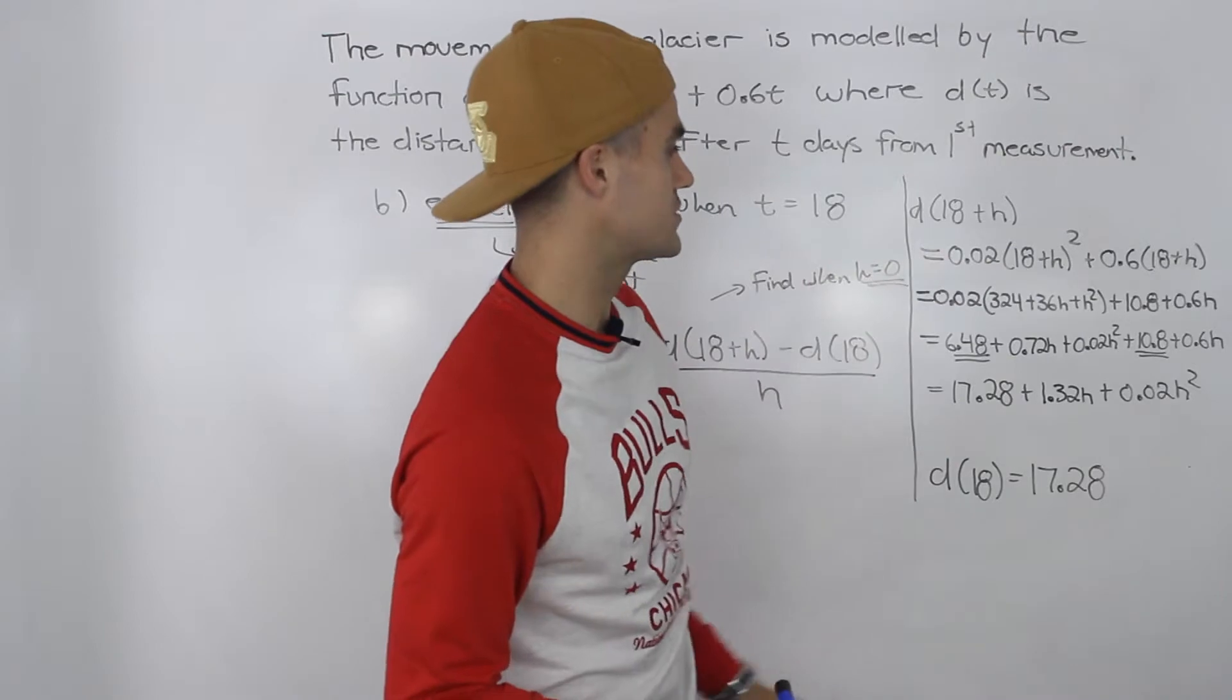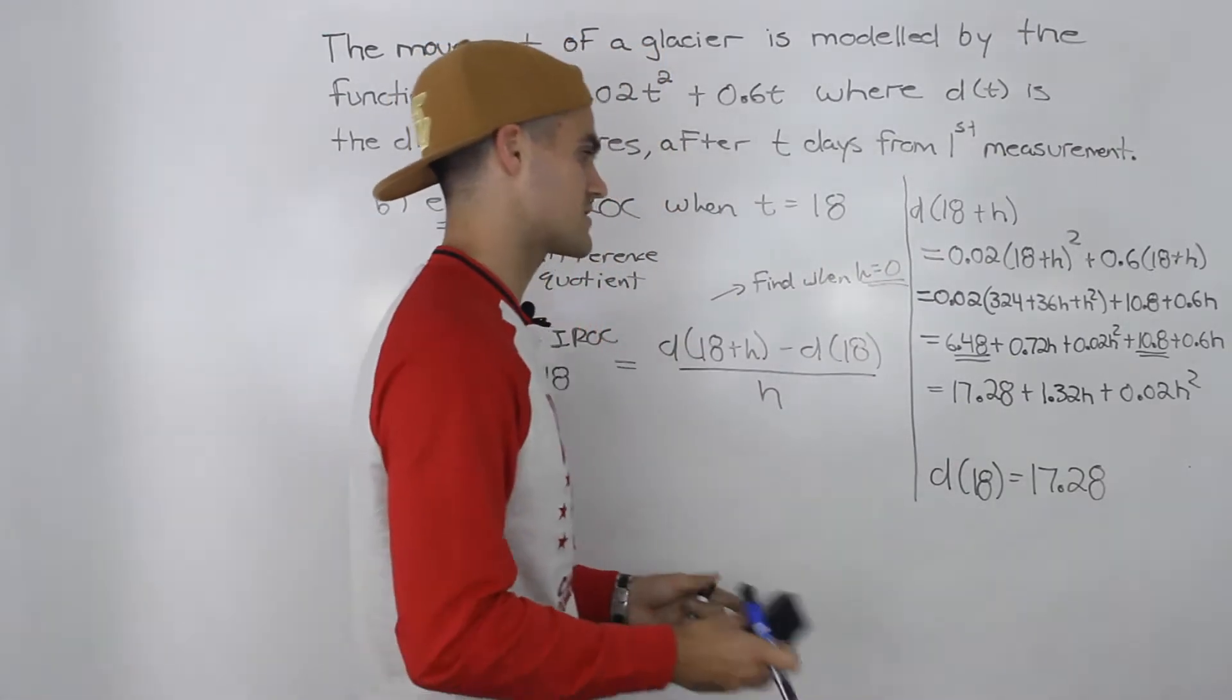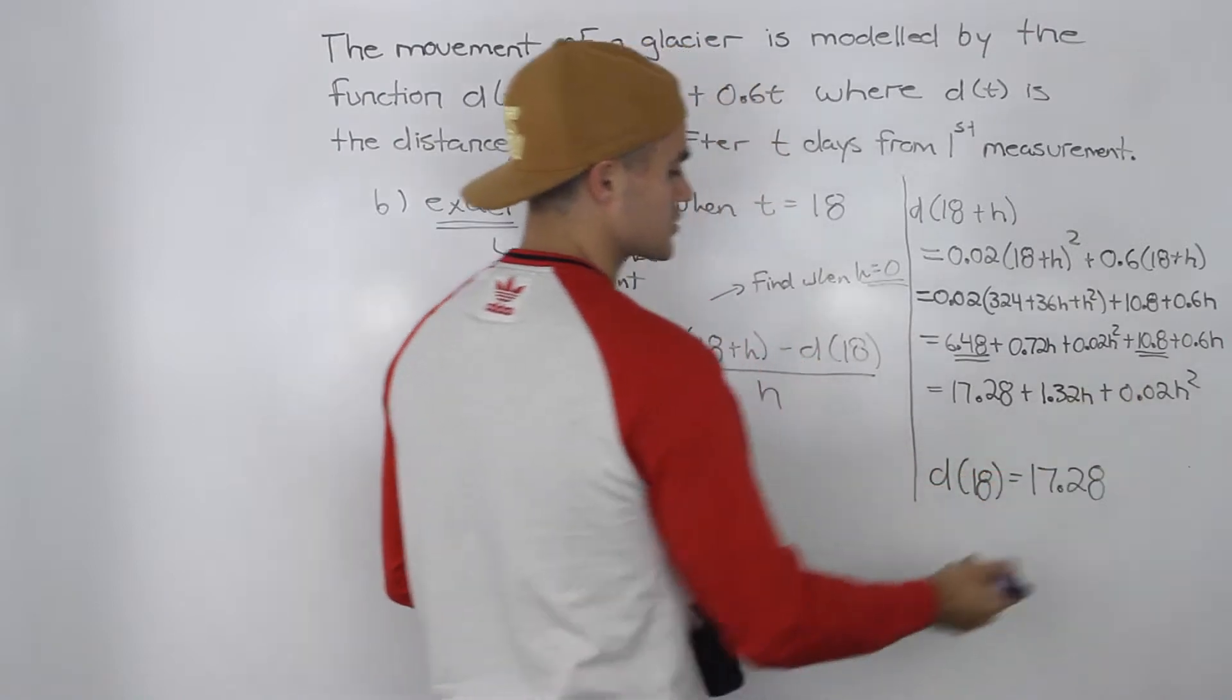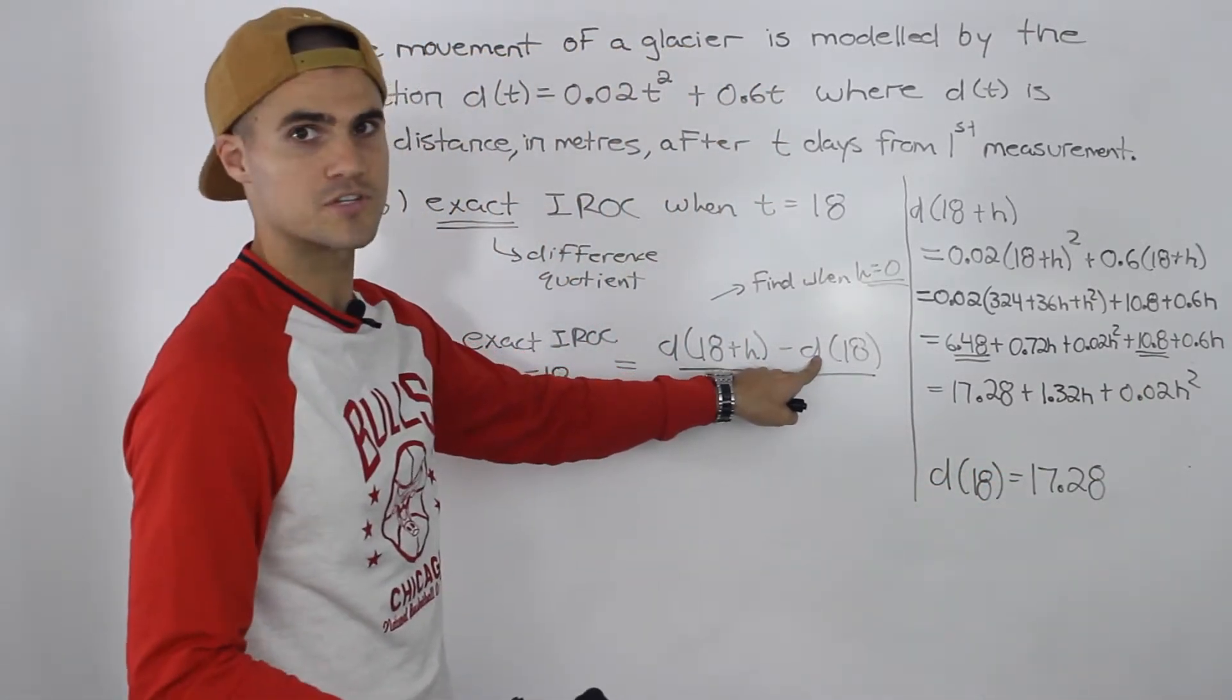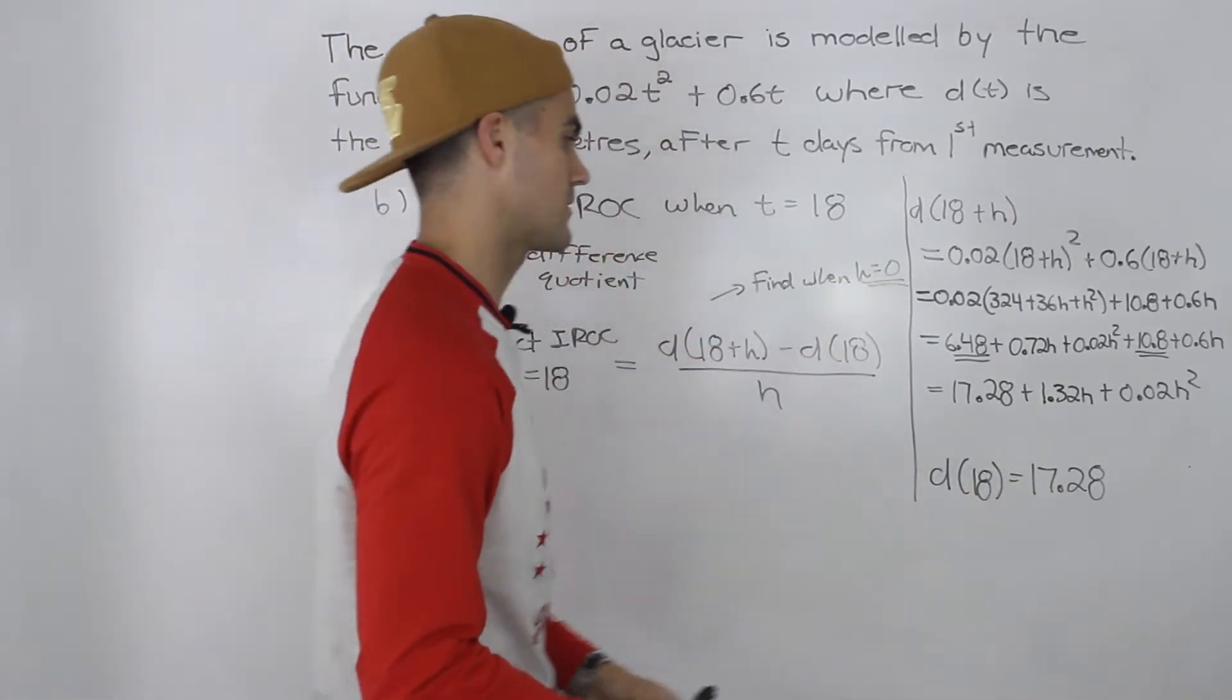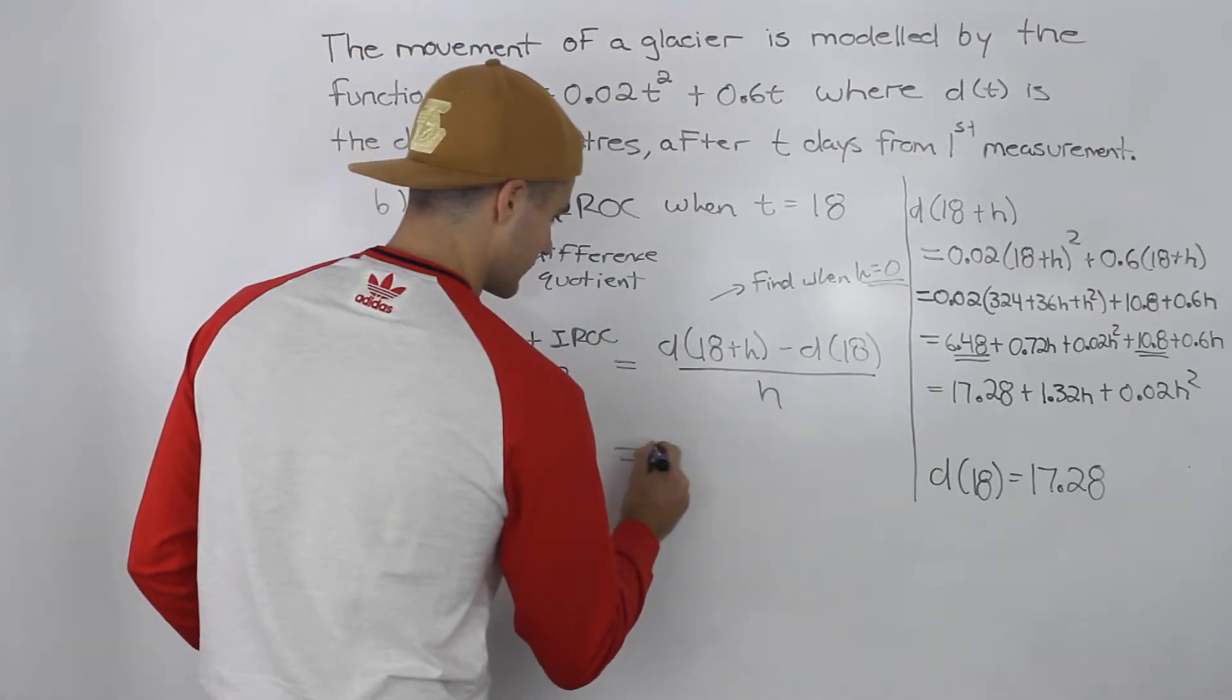After bringing in that 0.02, simplifying everything, and collecting like terms, you end up getting 17.28 + 1.32h + 0.02h². Then for d(18), much more simple, you just plug in 18 for t and you get 17.28.